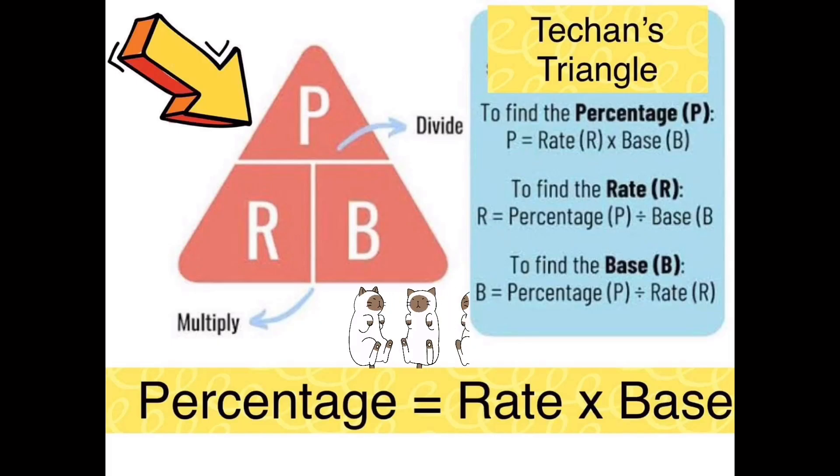This is the Techan's triangle. It is divided into three parts. The upper part is the percentage. The number that has the percent sign is the rate and the base represents the whole. The horizontal line means divide and the vertical line means multiply.